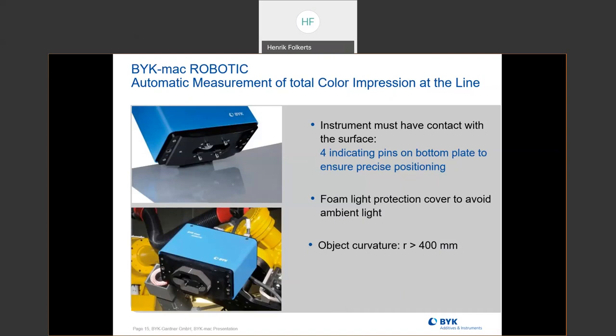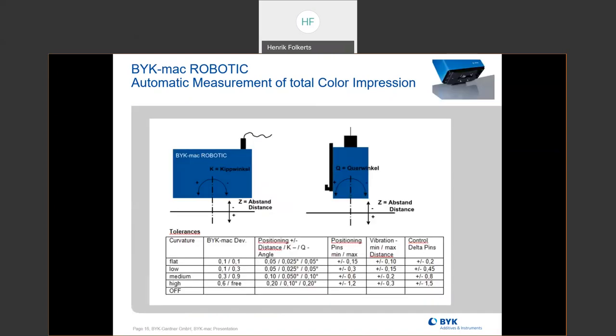For the curvature of the BIC-MEC, the radius has to be less than 400 millimeters. The pins work the same as the handheld — you have flat, low, medium, and high settings. For the robotic, we do not use the pin setting of off because the pins have to engage at some level in order to make sure the measurement is completed. If we turn the pins off, the instrument would not know it's in the proper position and so it would not measure.